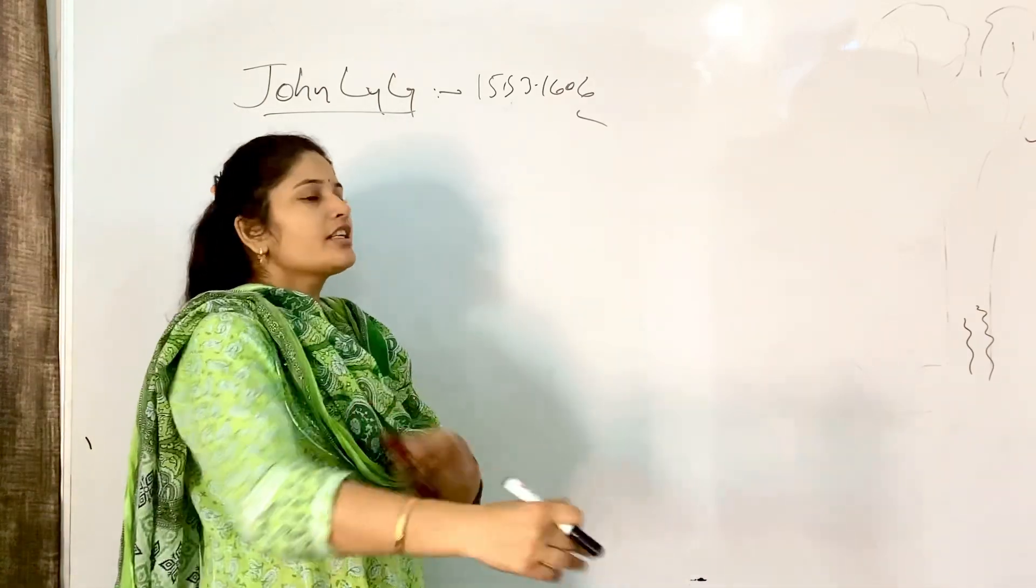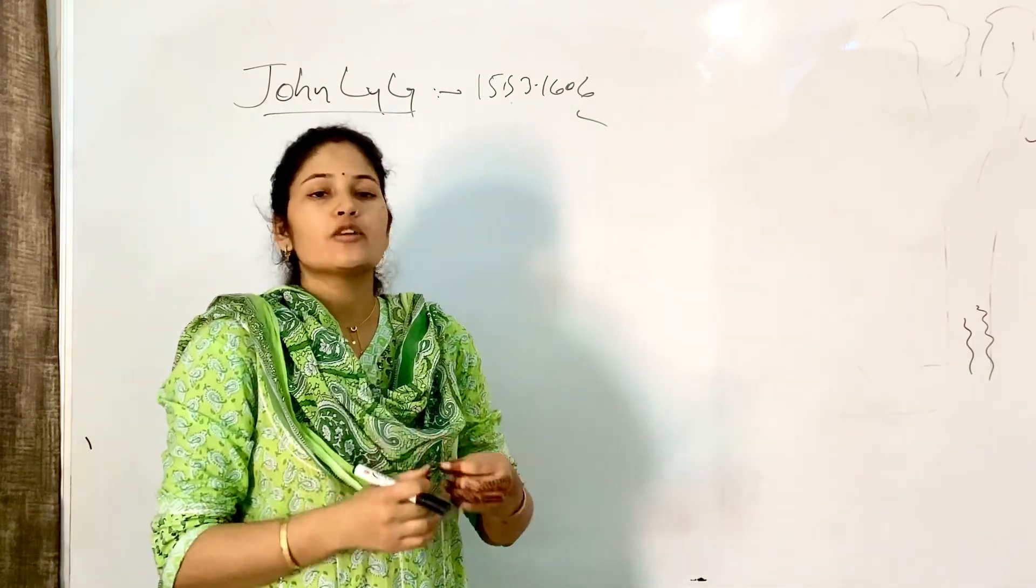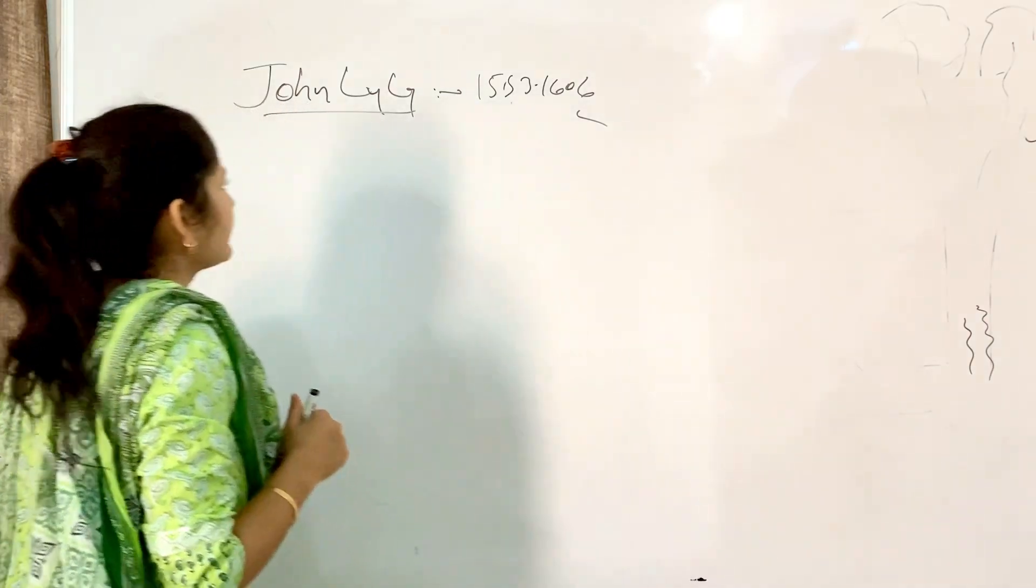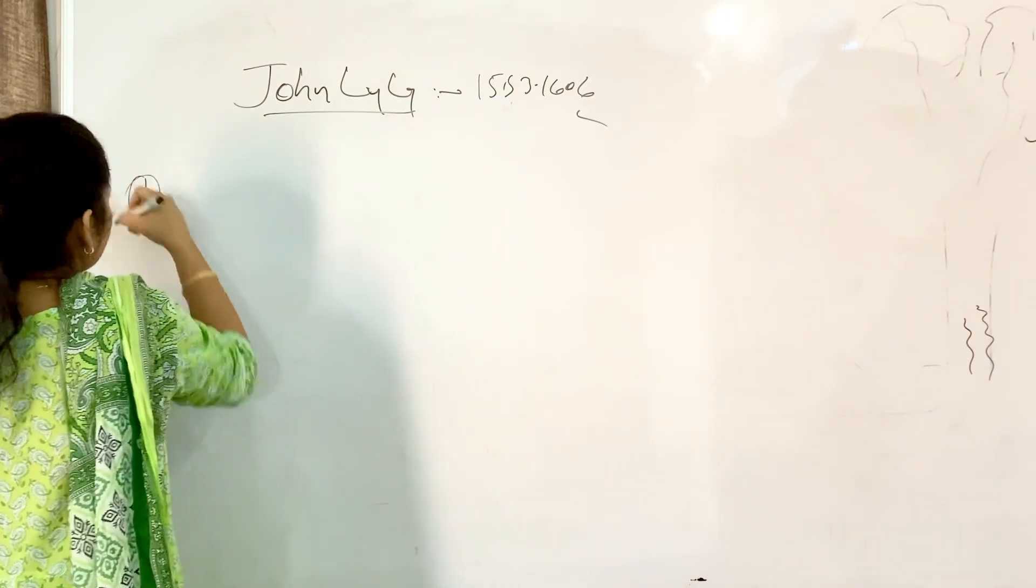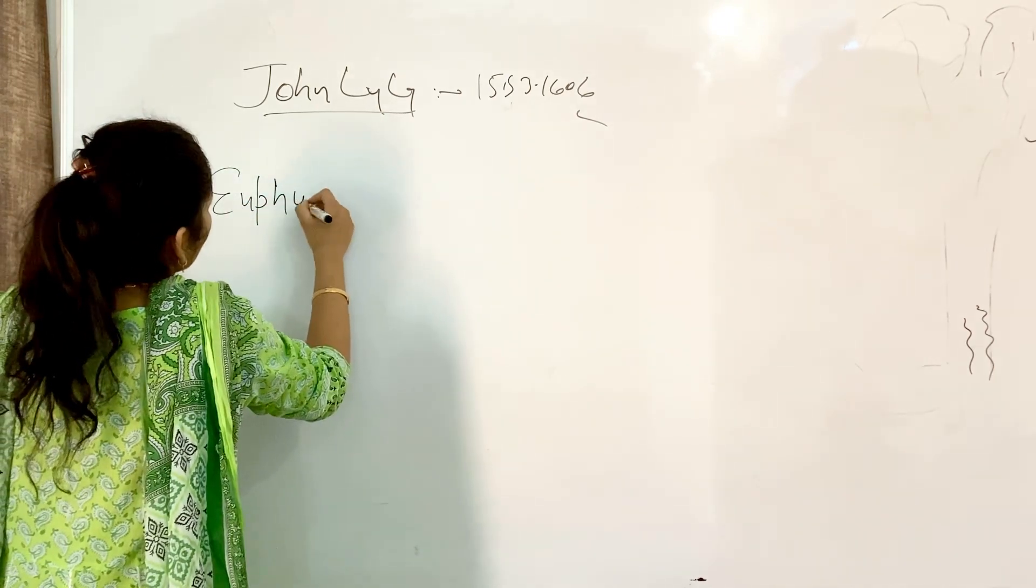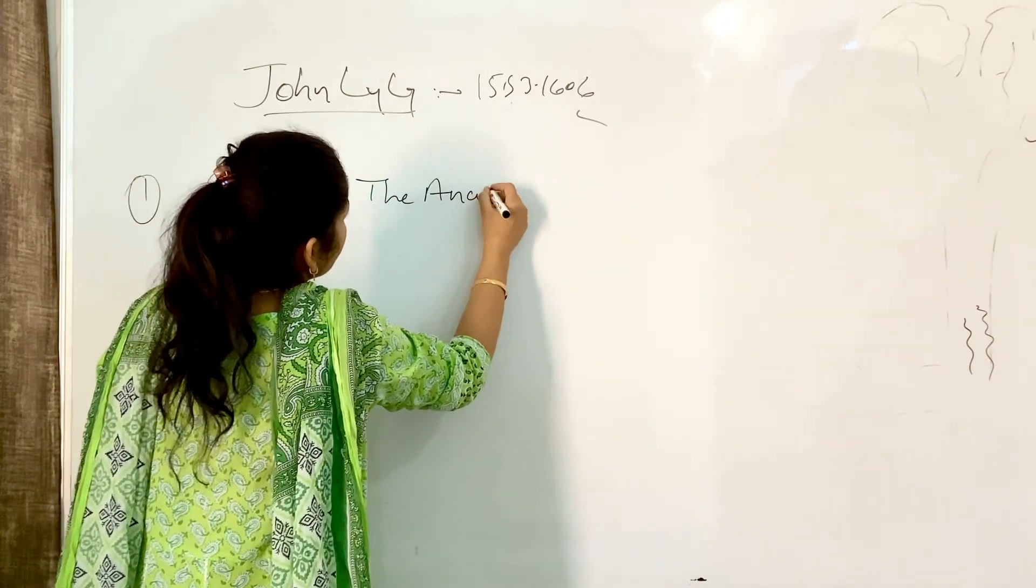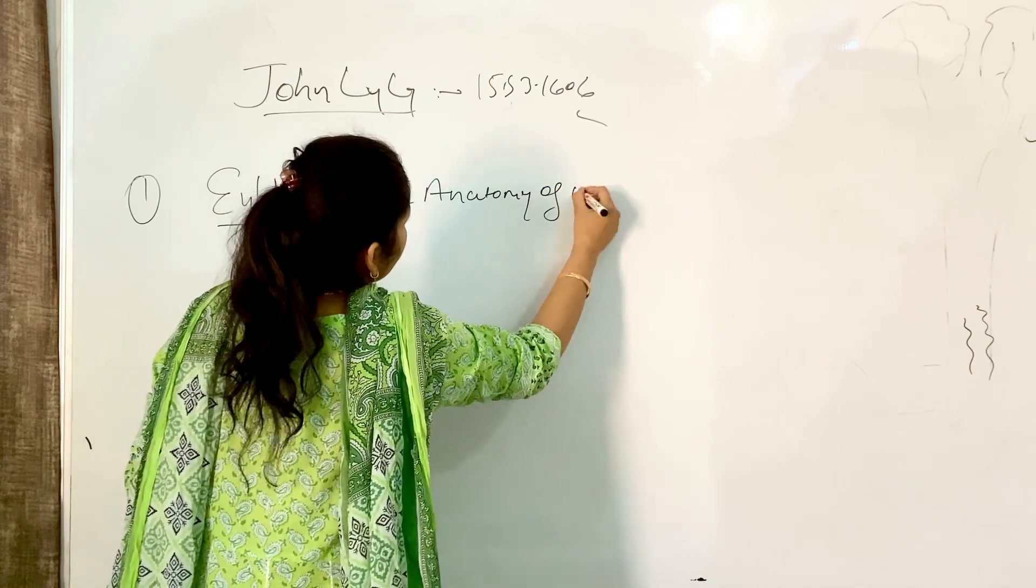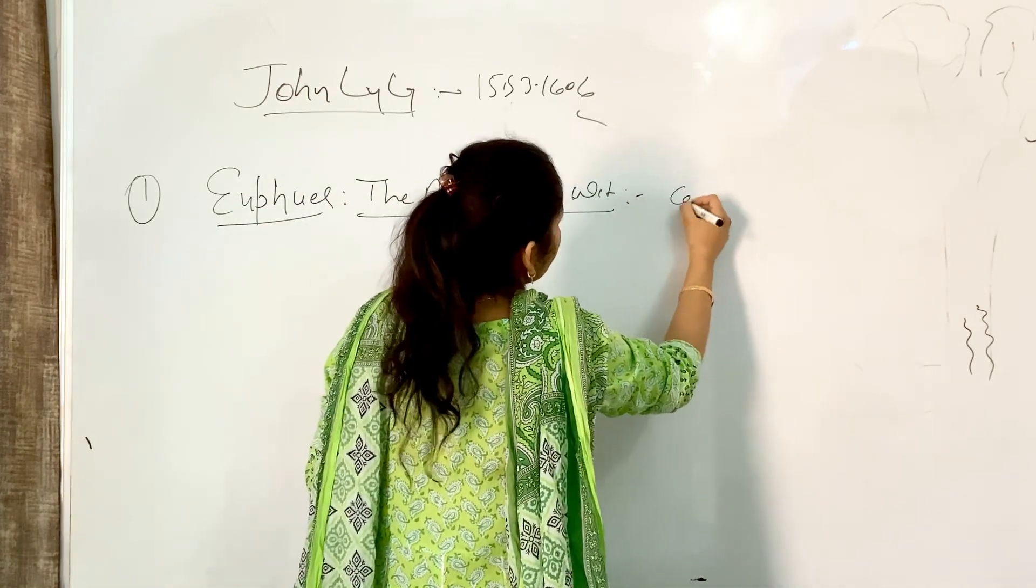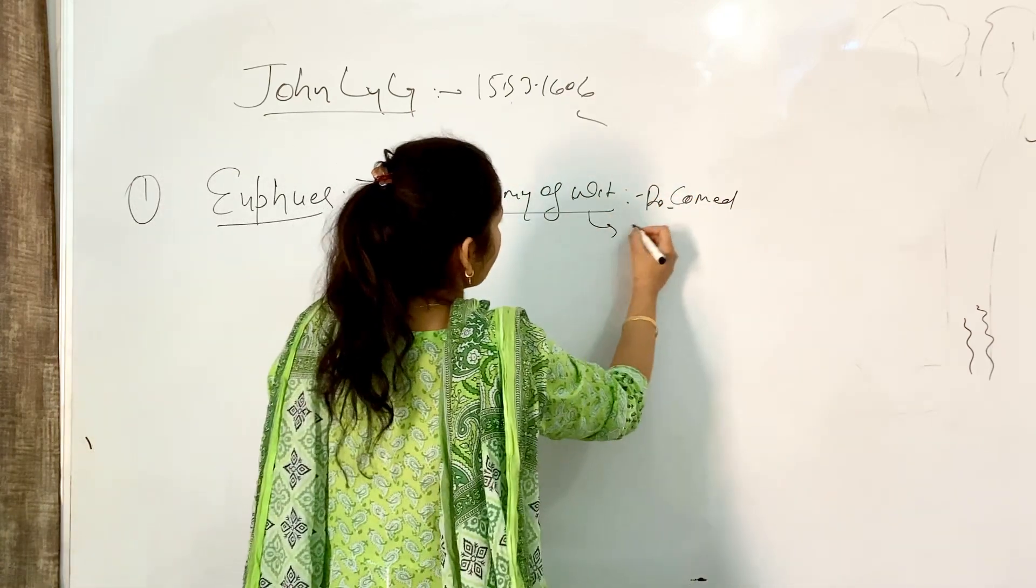He is known for his romantic comedies. His work mostly contains romance and comedy. So romantic comedy. First one is Euphues: The Anatomy of Wit. This is a comedy, a romantic comedy, which was published in 1578.